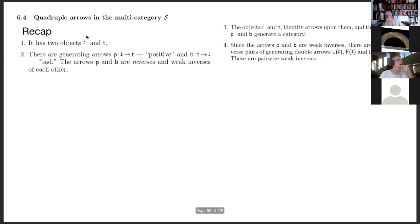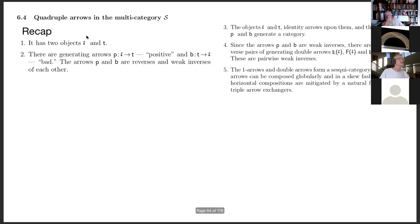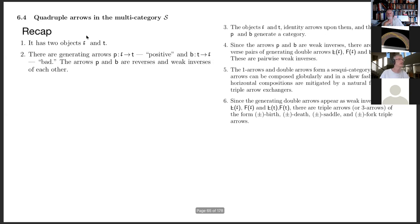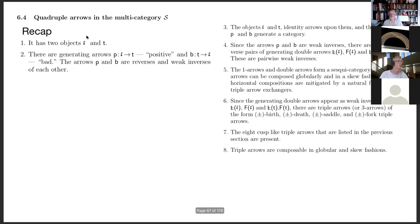What I mean by P and B being weak inverses is precisely that there are two reverse pairs of generating double arrows that are also pairwise weak inverses. There's a word here: sesquicategory. Sesquicategory gets me out of the realm where I have horizontal compositions of double arrows. We're going to allow them to be composed globally in a skew fashion, but horizontal compositions are mitigated by exchangers. Since the various Fs are weak inverses, we have birth, death, saddles, and forks as triple arrows, along with the eight cusp-like arrows.